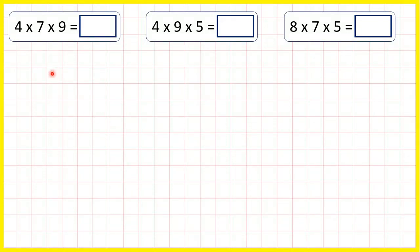Now for these questions we're multiplying three numbers together. So we could do 4 times 7, which is 28, and then work out 28 times 9. But with multiplication, order doesn't matter.